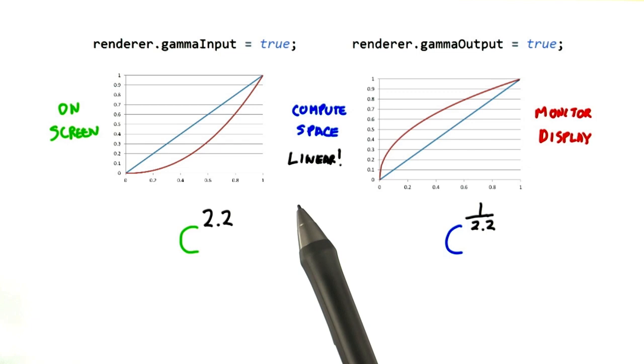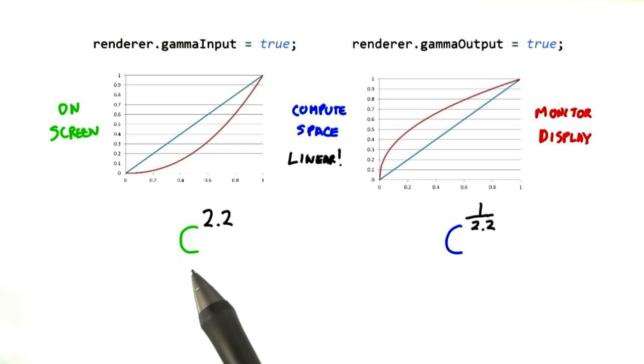Internally in Three.js, there's some approximation of gamma, so a value might be squared instead of raised to the 2.2 power to bring it into linear computation space. To see the effect of gamma correction, take a look at the demo that follows.